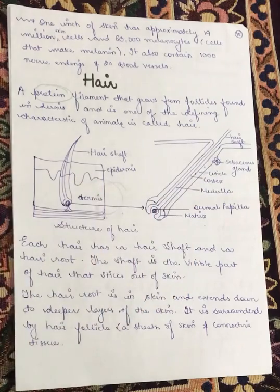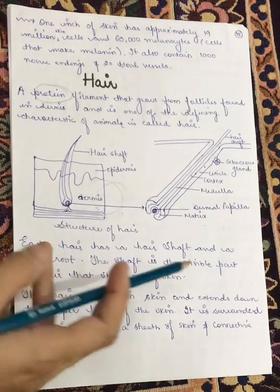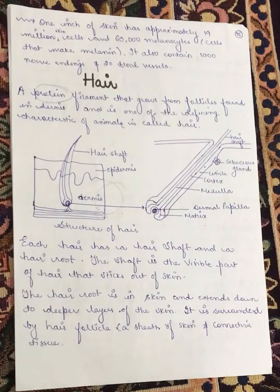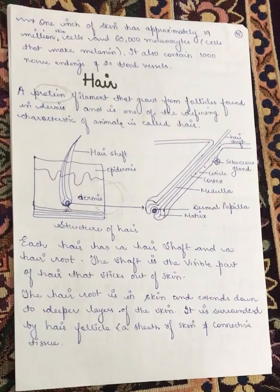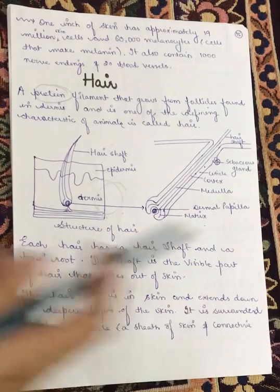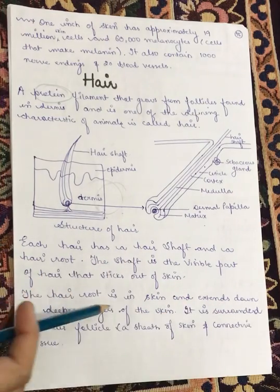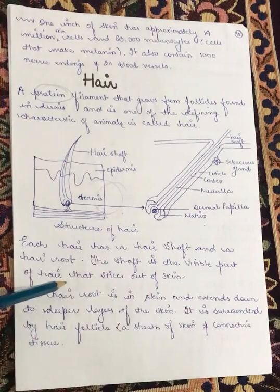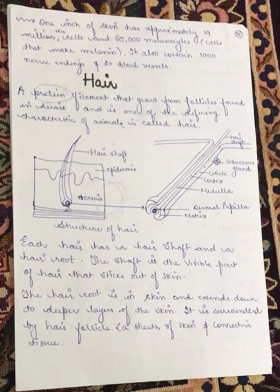Each hair has a hair shaft and a hair root. The hair shaft is the visible part of the hair that sticks out of the skin. The hair root is inside the skin and extends down to the deeper layers. It is surrounded by the hair follicle, a sheath of skin and connective tissue.